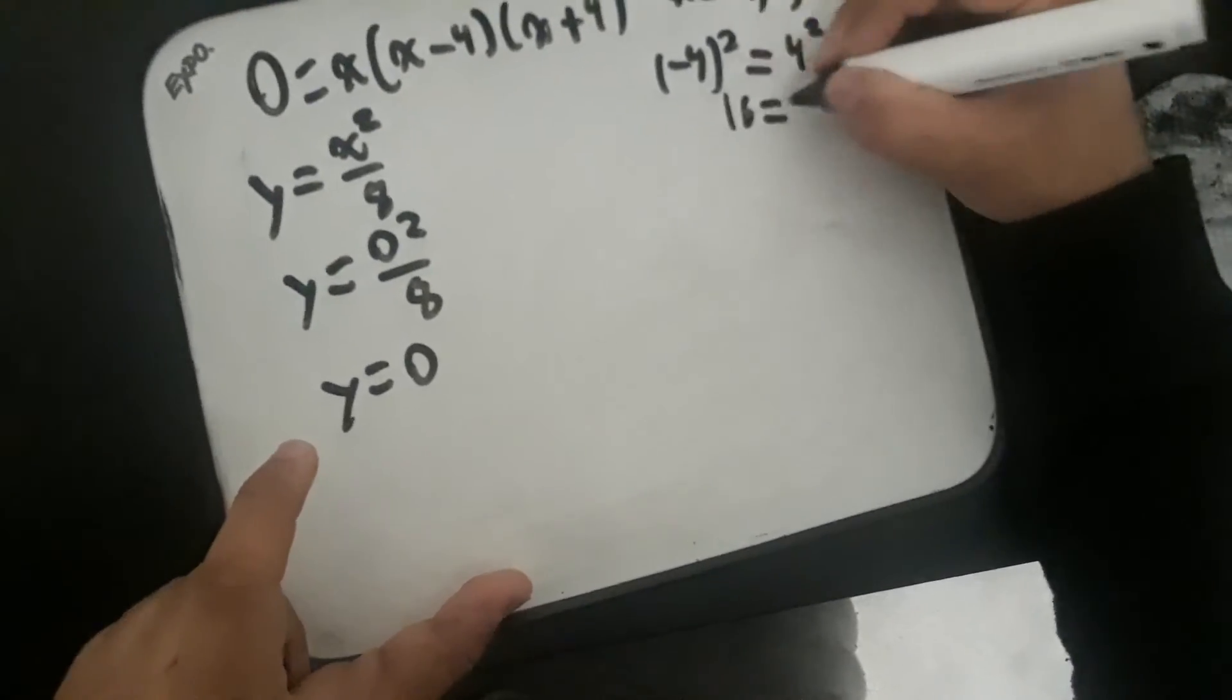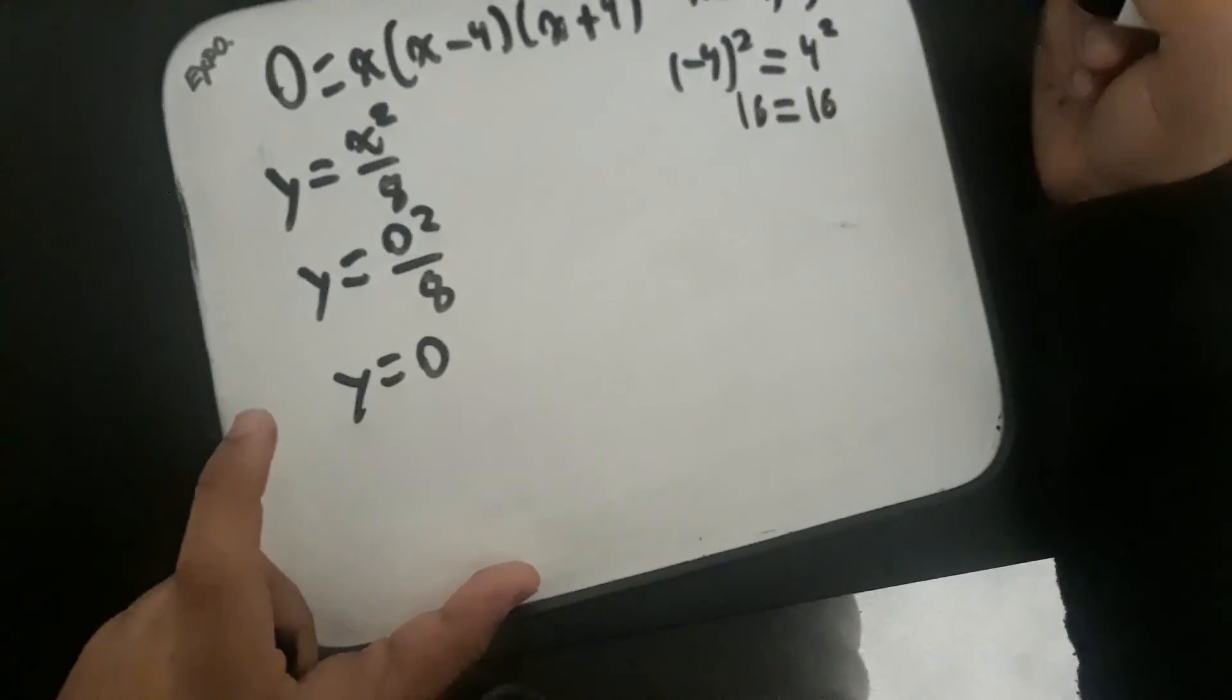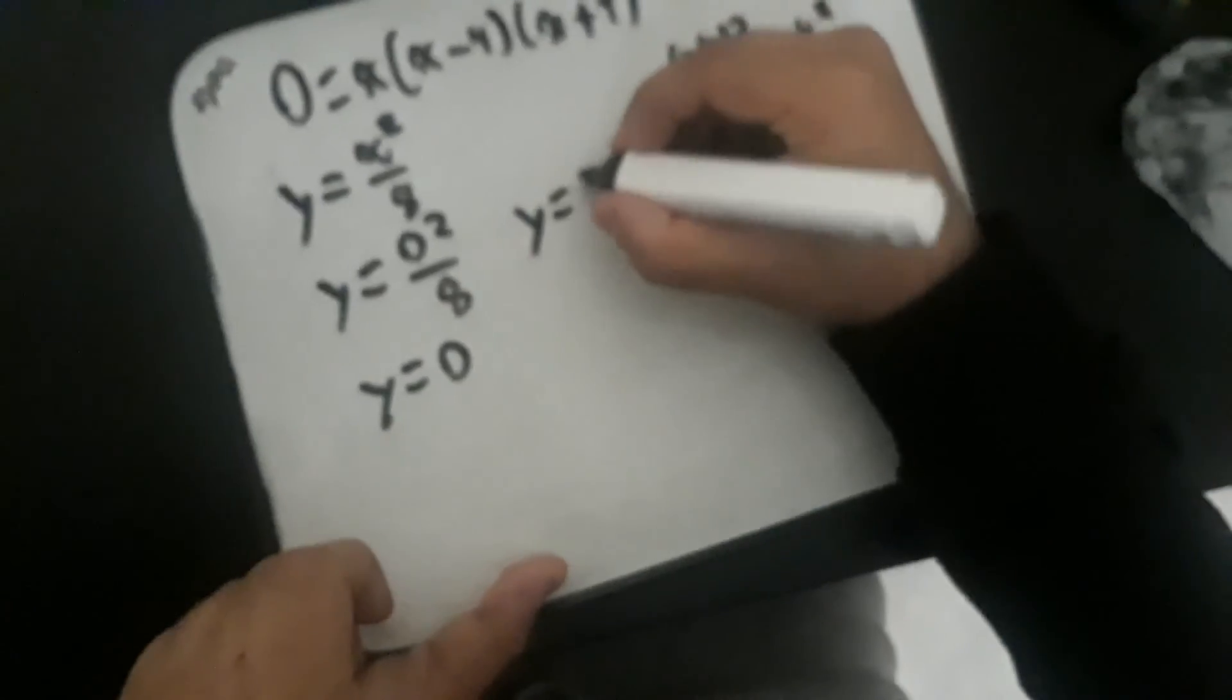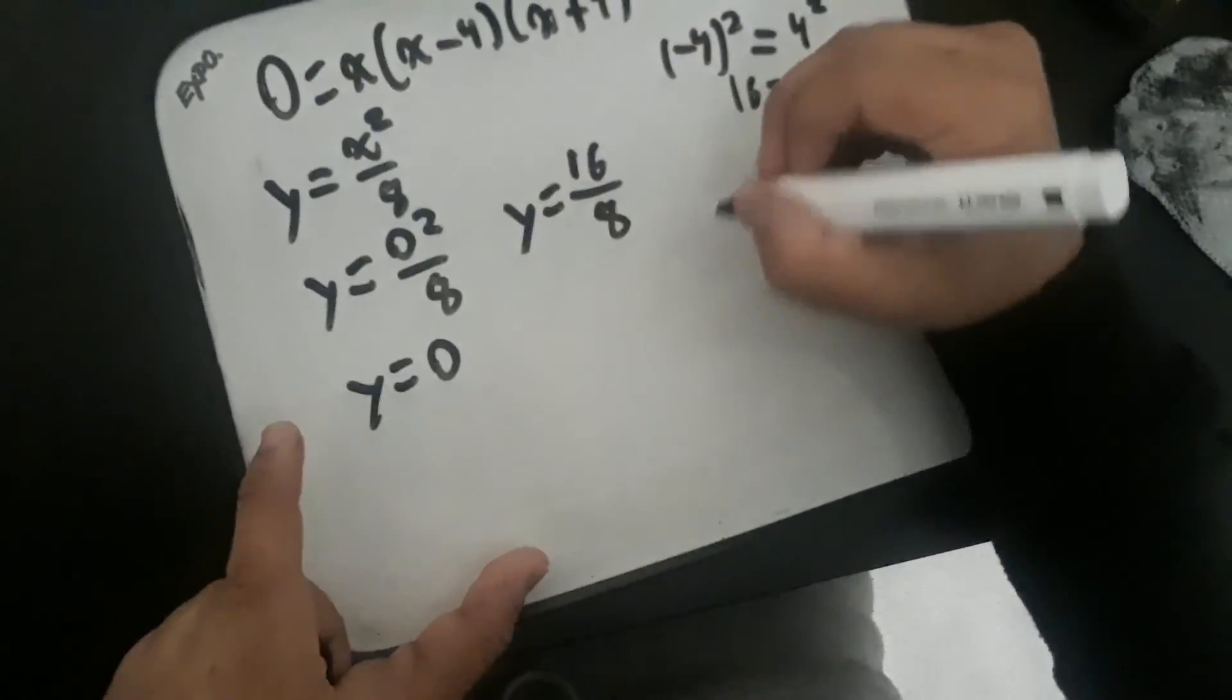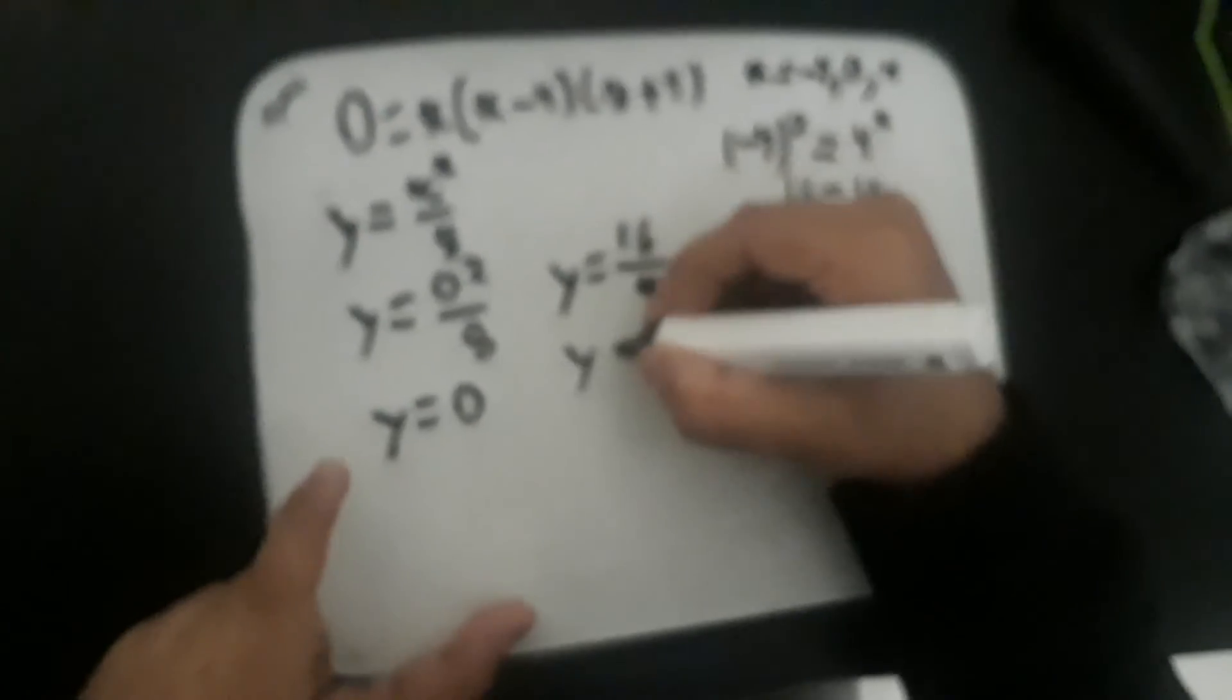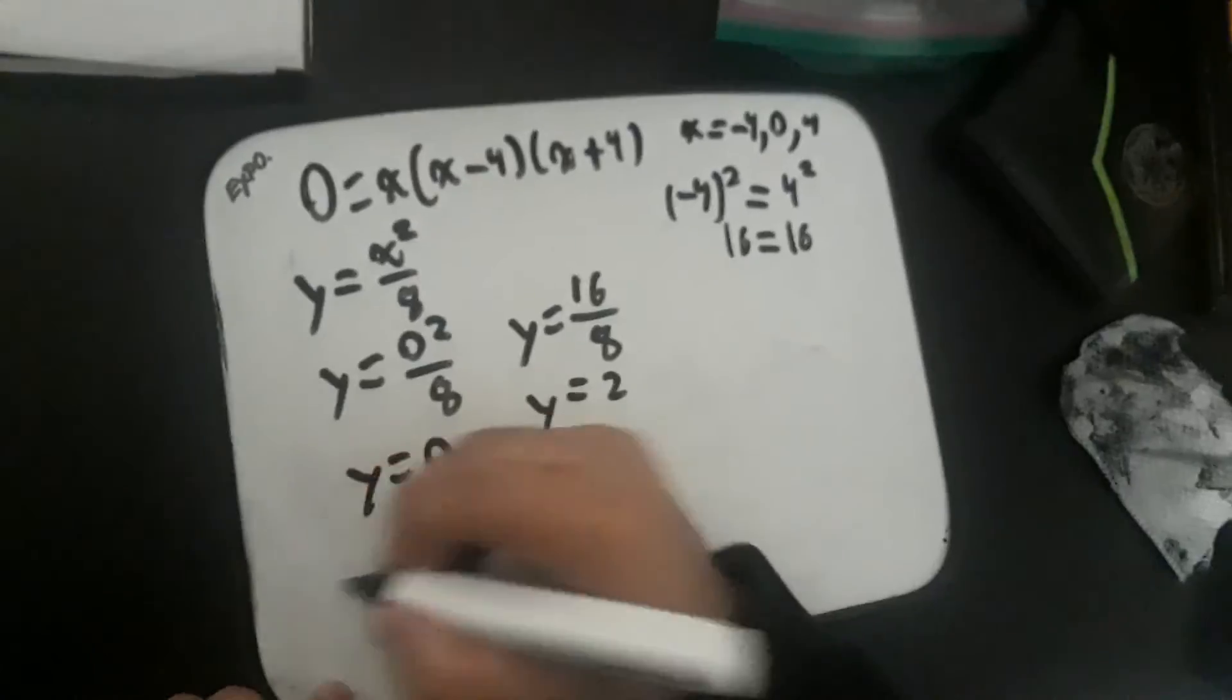So in other words, when you sub in both of these x values, you would get 16 over 8 in both cases, which can be simplified to 2.